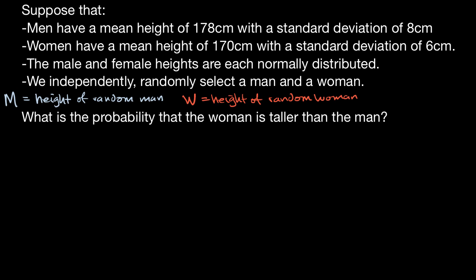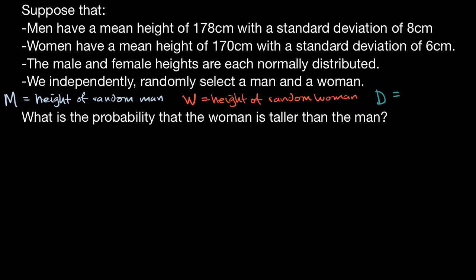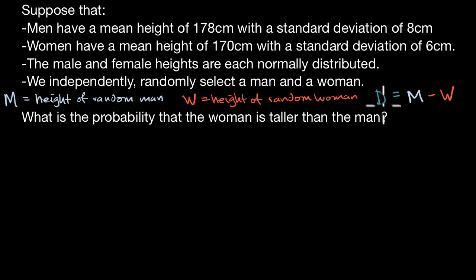What if we defined a third random variable in terms of these first two? Let's call this D for difference. It is equal to the difference in height between a randomly selected man and a randomly selected woman. So the random variable D is equal to the random variable M minus the random variable W.